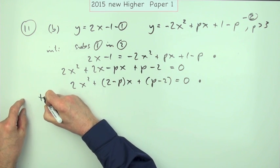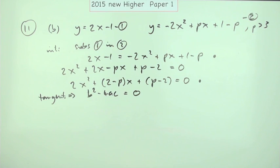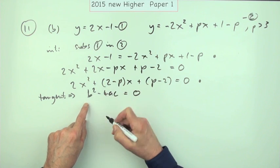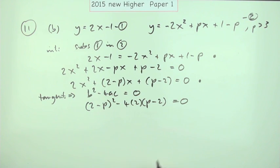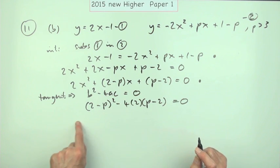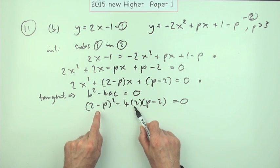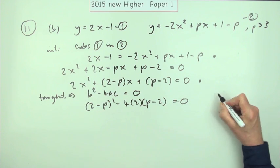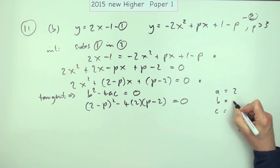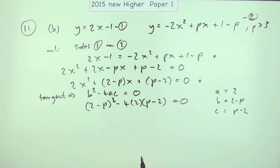The next part is to state: if it's a tangent, that means the discriminant should equal 0. Knowing to use the discriminant and identifying the parts is a mark. So putting that in: b squared, which is 2 minus p squared, minus 4 times 2 times p minus 2 should equal 0. There was one mark for knowing to use the discriminant and correctly identifying a, b, and c from the quadratic.